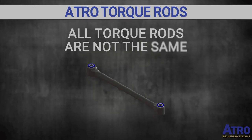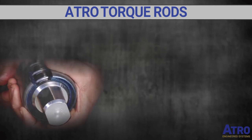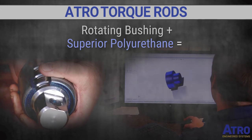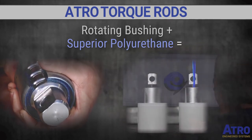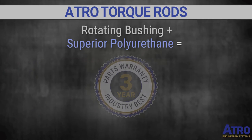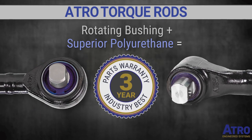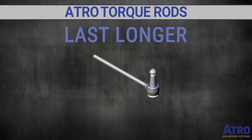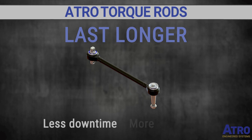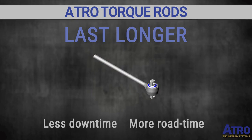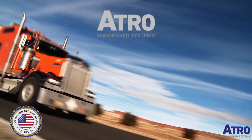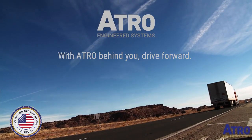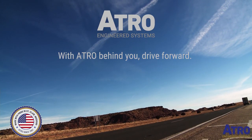All torque rods are not the same. The combination of Atro's rotating bushing and our superior application-specific polyurethane outperforms rubber in every way. That's why Atro can provide the industry's only 3-year parts warranty and a 2-year warranty on small light torque rods. Atro torque rods last longer — for you and your fleet, that means less downtime and more road time.